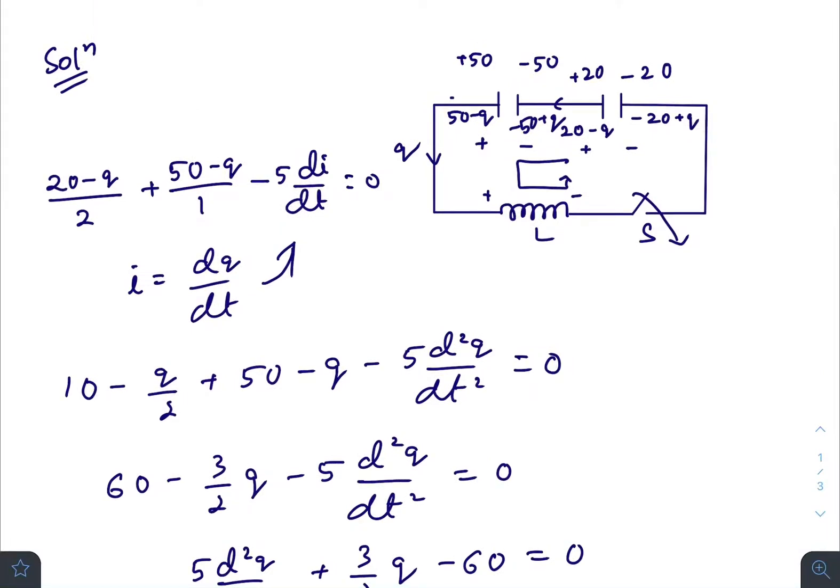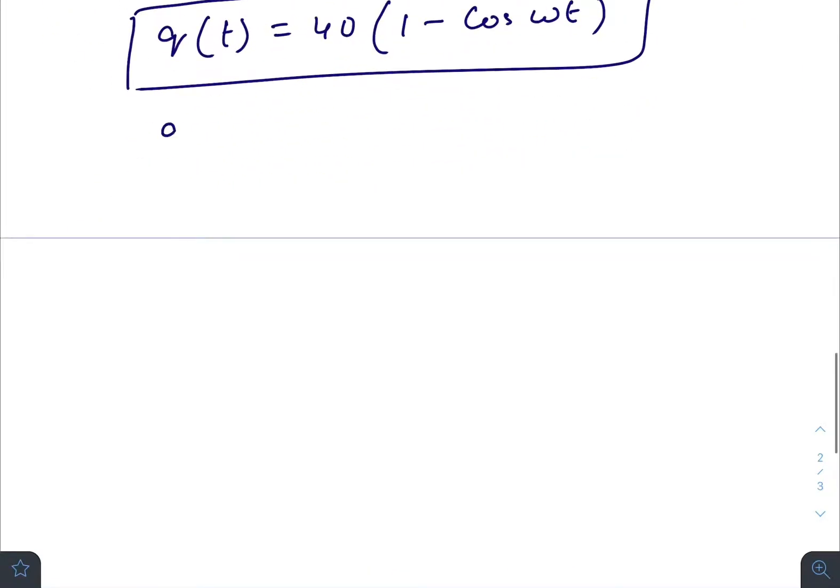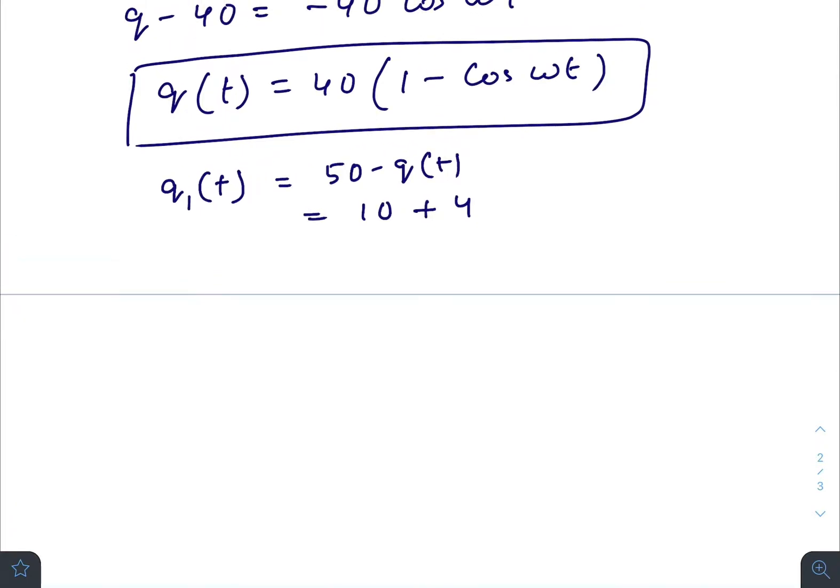But our question was to find the charge present on this capacitor at any time t, and its answer will be 50 minus q. So q₁, the charge on capacitor 1 at any time t, is 50 minus q(t). That will give you 50 minus 40(1 - cos(ωt)), which equals 10 plus 40 cos(ωt).